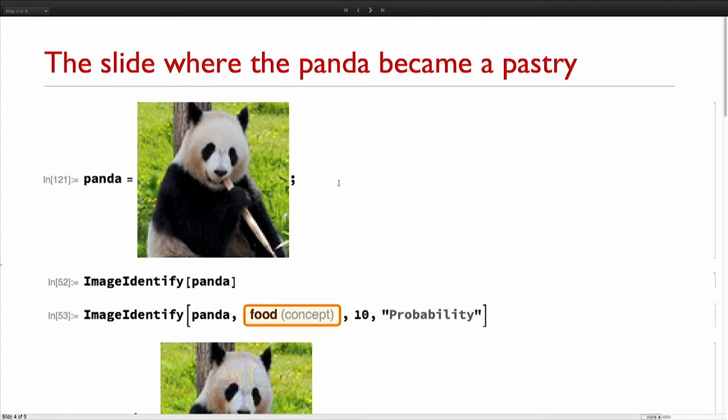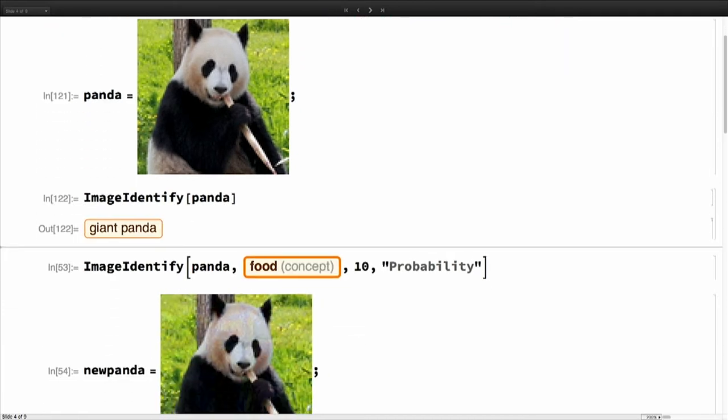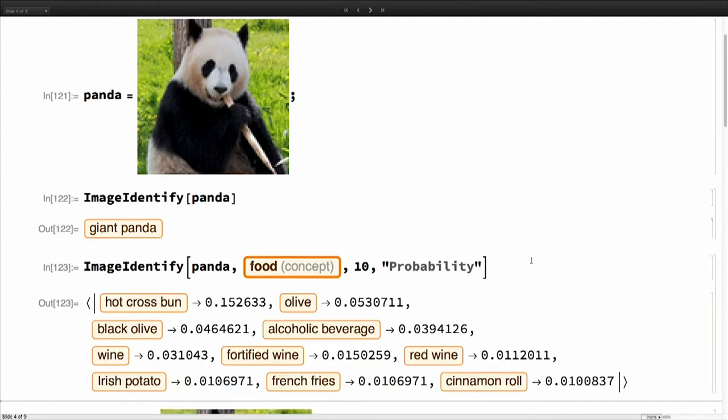Let's look at this panda. It's a panda. What image identify can do is you can say, what if this panda were food, and give me the ten most and give me the probability. If you do that, obviously you get an answer, but the probability is rather low. There's no problem here.